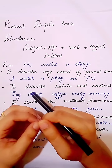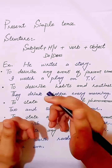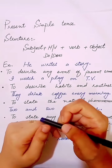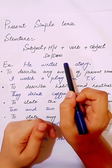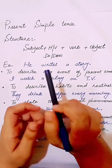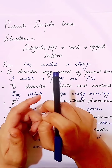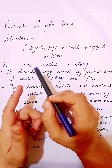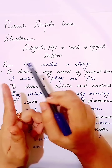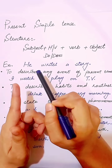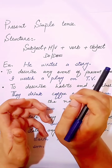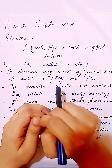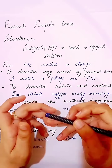For the negative sentence of present simple tense: subject, then helping verb, then 'not', then verb, then object. For the interrogative sentence: we write the helping verb 'do' or 'does' according to the subject, then the subject, then the verb, then the object, and finally a question mark. This covers the structure of simple, negative, and interrogative sentences for present simple tense.